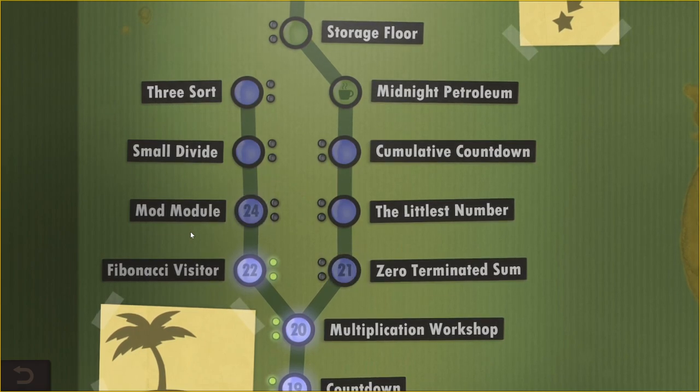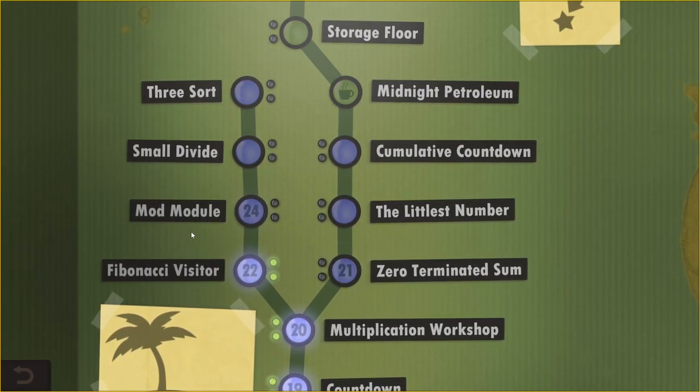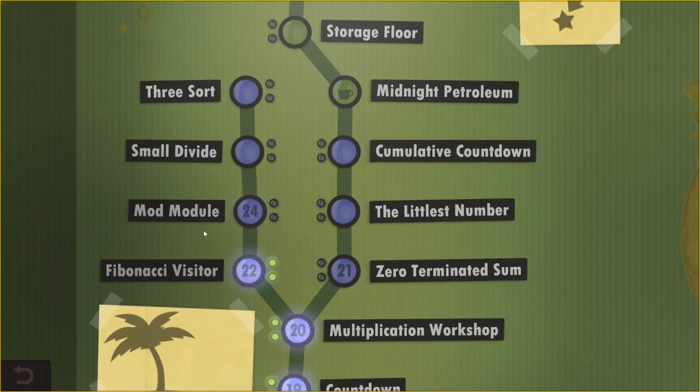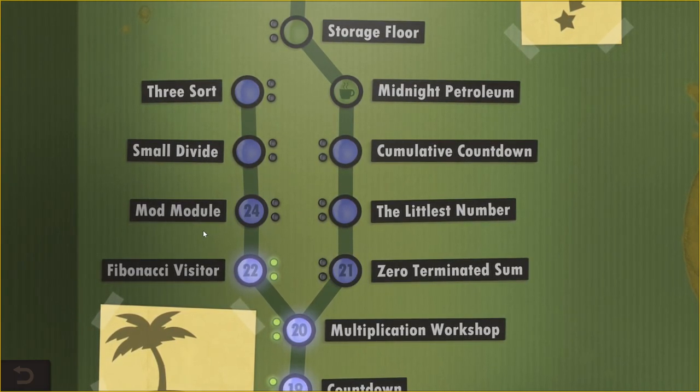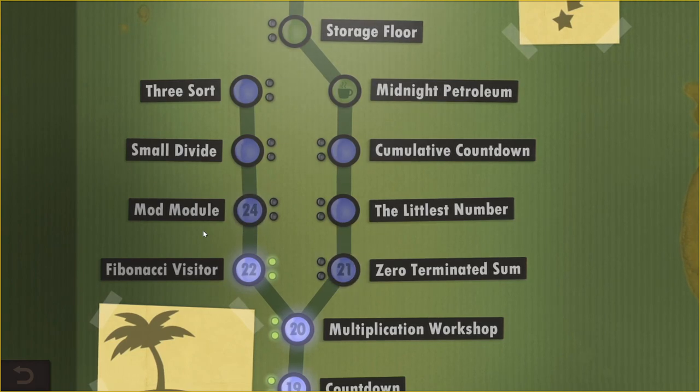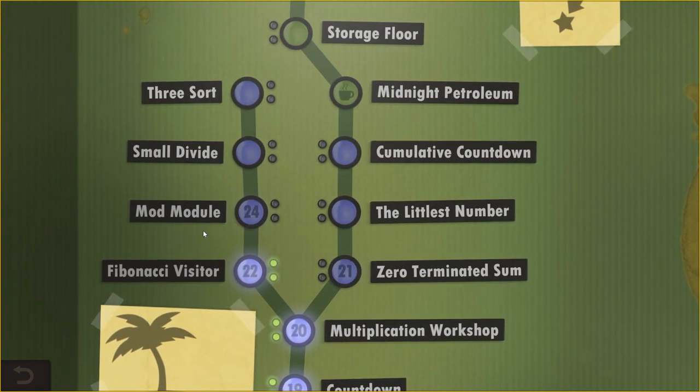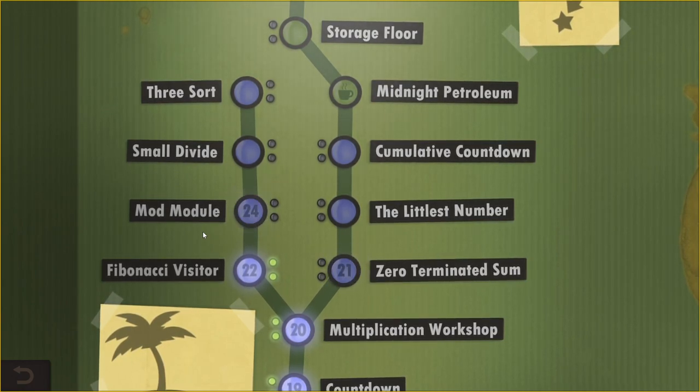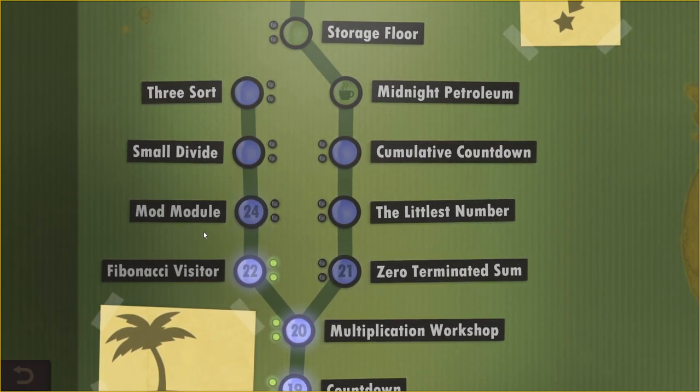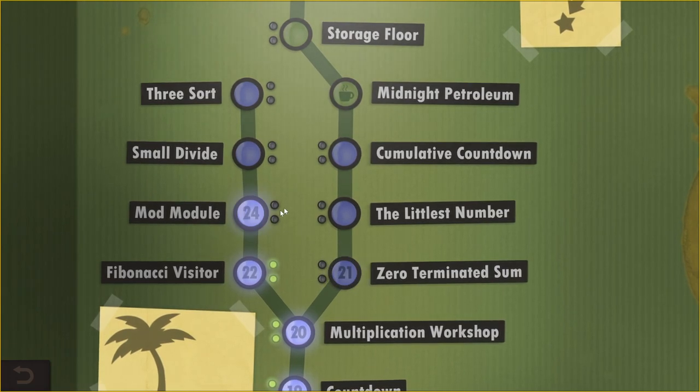Basically, you can think of the mod operator in its simplest term as the remainder of a division problem. So let's say you had 2 into 5, 5 divided by 2, your result is 2 remainder 1, which 5 mod 2 is 1 because the remainder of that division problem is 1.